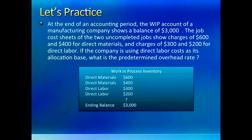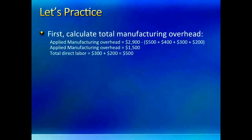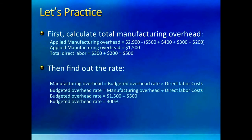In this problem you are given a work in process inventory account. The question wants you to find the budgeted manufacturing overhead rate. Start with the total amount of applied manufacturing overhead — it would be the difference between the ending balance of the work in process account and the total of direct material and direct labor. Next, total the direct labor costs and since they are used as the allocation base, write down the definition of applied overhead: budgeted manufacturing overhead rate times actual direct labor costs. So 1,500 is equal to the budgeted manufacturing overhead rate times direct labor costs, which means the budgeted overhead rate must be 300.